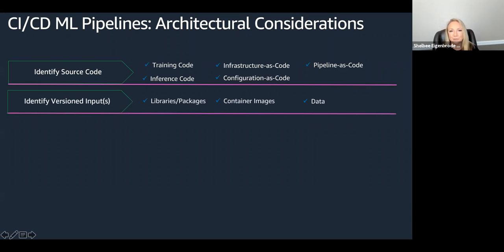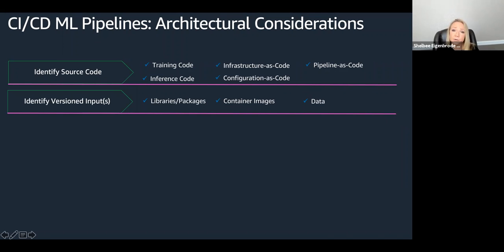Next, you want to identify all of your versioned inputs. Each of those high-level steps inside that workflow have a specific input. You want to make sure you're looking at all of your versioned inputs, such as common data science libraries and packages. This would apply if you're bringing your own code or container to SageMaker — you want to capture the levels of the different libraries and packages you're bringing in. You also want to capture the container images themselves as versioned inputs. If you're using one of the pre-built container images, you're just using a particular version of that container image. Whereas if you're doing bring-your-own-container, you have your Docker code used to build that container image, plus the container image version itself as an input.